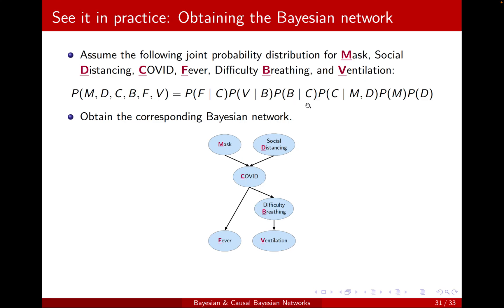It says that b itself is conditioned on COVID, so a link from COVID to b. f is conditioned on c. Fever has a link from COVID. And the remaining one, c is conditioned on m and d. So here to the other two. You start from somewhere, say the right, straightforward, and then connect the links.